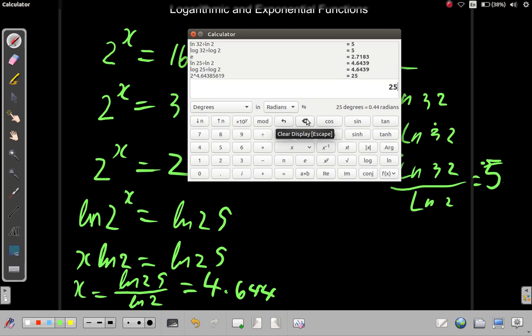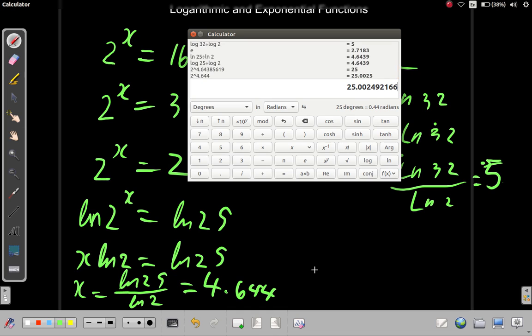If you use the 4.644, you'll get close to 25, but not exactly because of the rounding off. So, it's 2 raised to the power of 4.644 equals. You get 25. Very close to 25. So, those are what we have here.